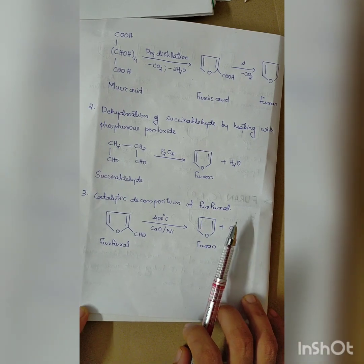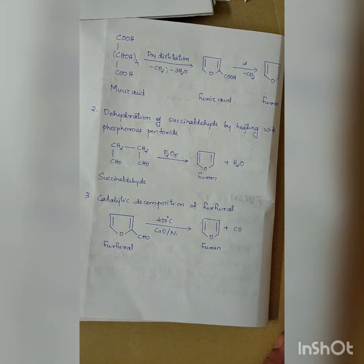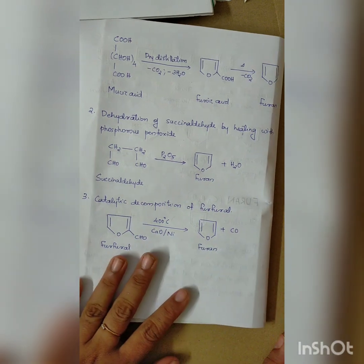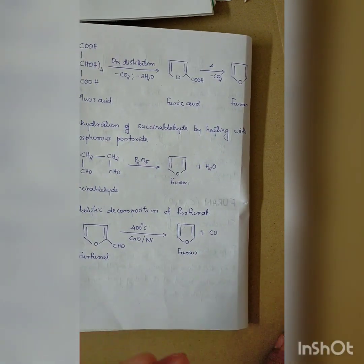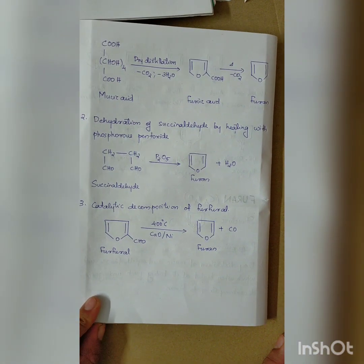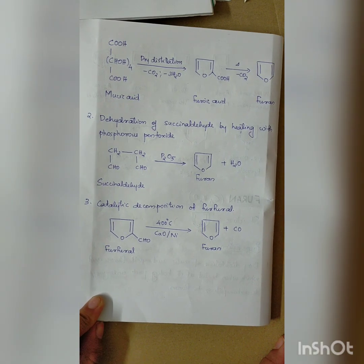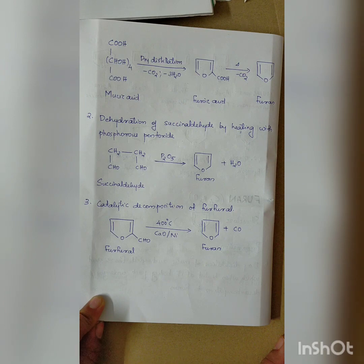To summarize the three preparation methods: Method 1 is dry distillation of mucic acid to give furoic acid, followed by decarboxylation of furoic acid. Method 2 is dehydration of succinaldehyde by heating with phosphorus pentoxide. Method 3 is catalytic decomposition of furfural.